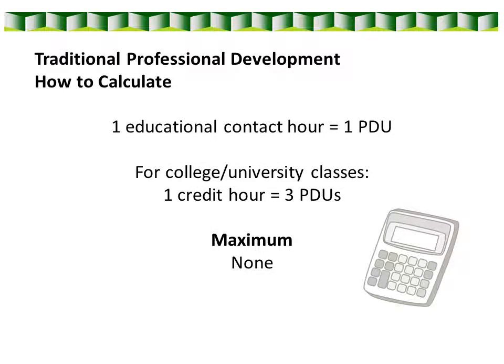To calculate the number of PDUs you earn, it's a one-to-one ratio — for each hour of educational content, you earn one PDU. The only exception is for college classes, which are based on the number of college credits you earn. Each credit is equal to three PDUs, so a three-credit-hour university class would be equivalent to nine PDUs. There's no maximum number of PDUs that you can earn through traditional professional development activities.